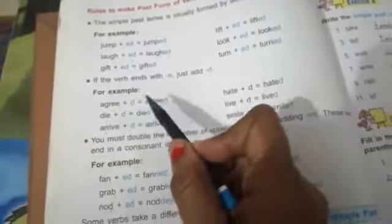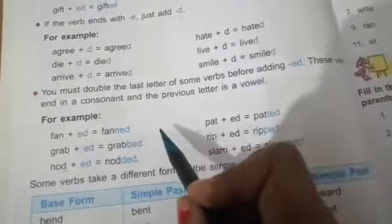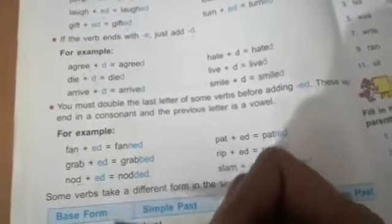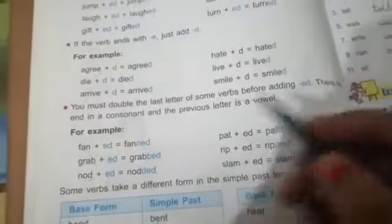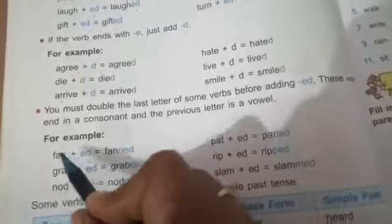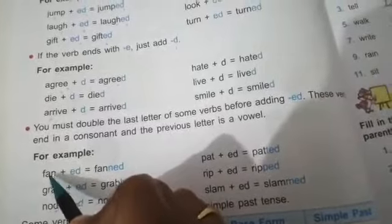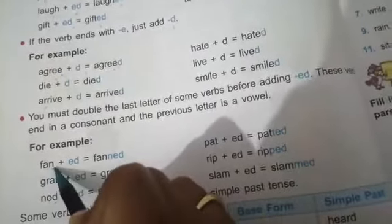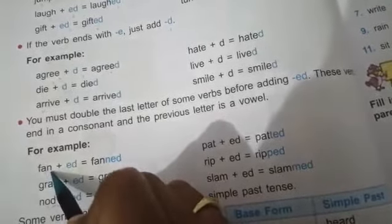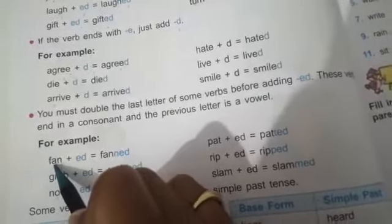Now, sometimes what happens? We have to double the last letter of some verbs before adding ed. See, fan. Fan is ending with consonant sound, and just before the consonant, vowel is there. So if we will get like this, we will simply double this consonant.